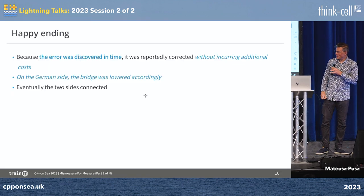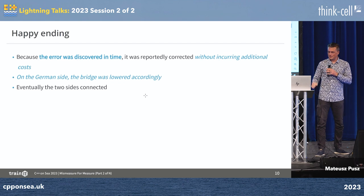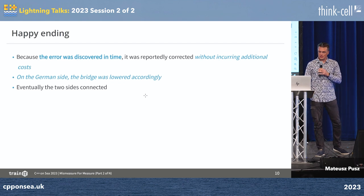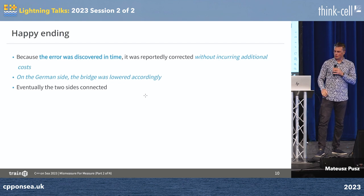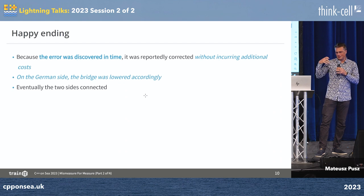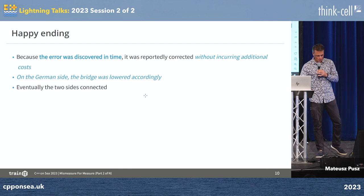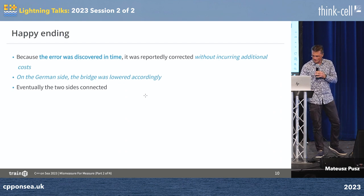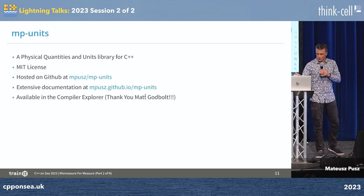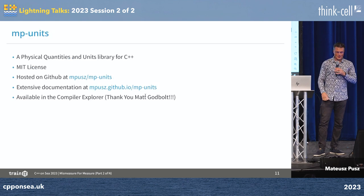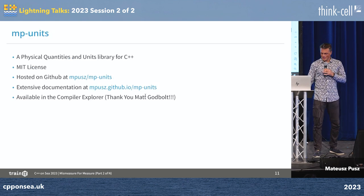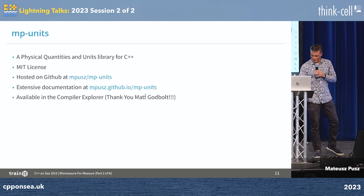It was actually a happy ending, because they discovered this on time. Germany built the road lower by 54 centimetres, and eventually the two sides of the bridge connected properly. Of course, you can use physical units libraries to actually not have this issue in production.